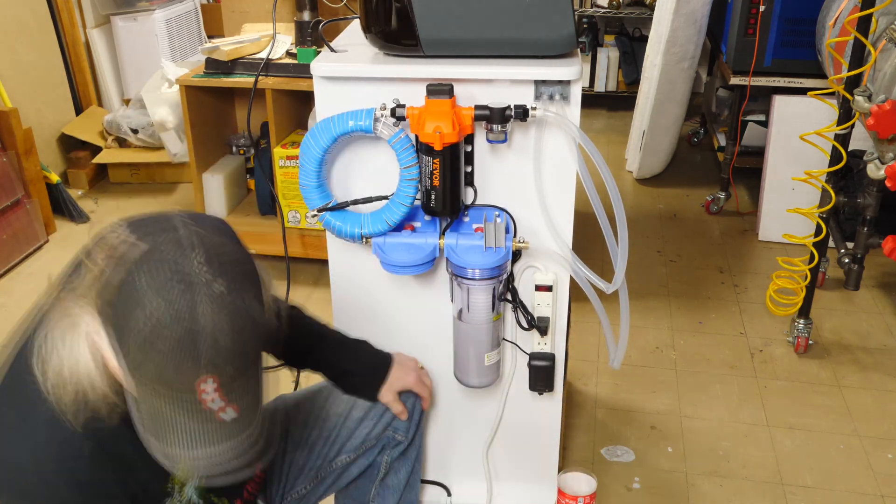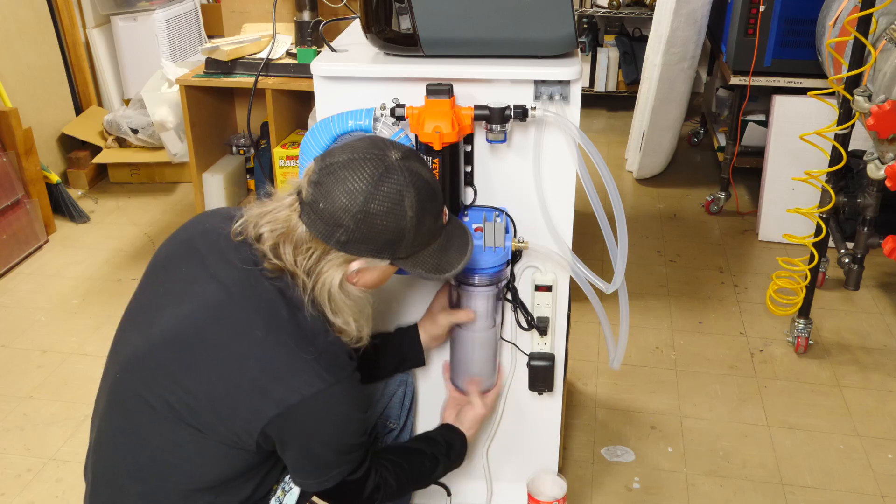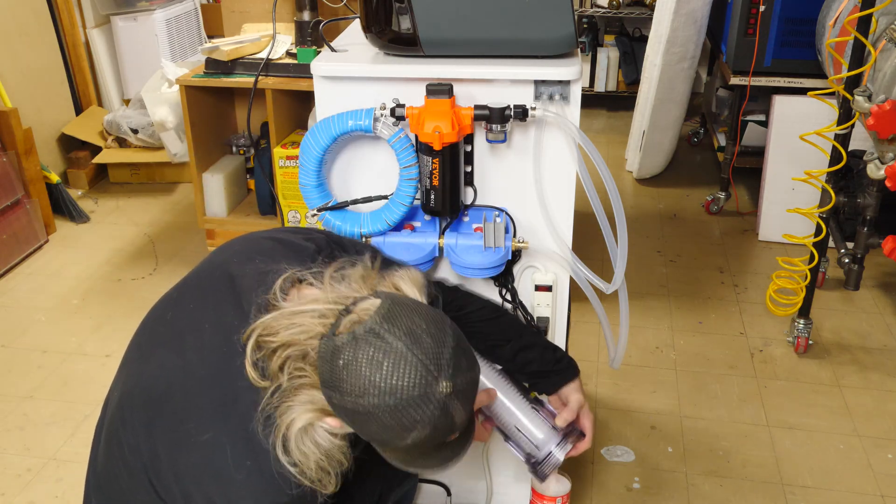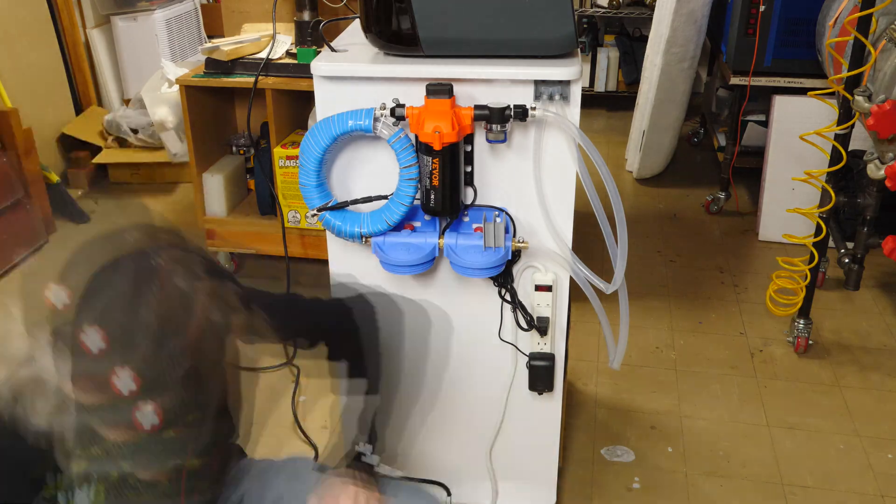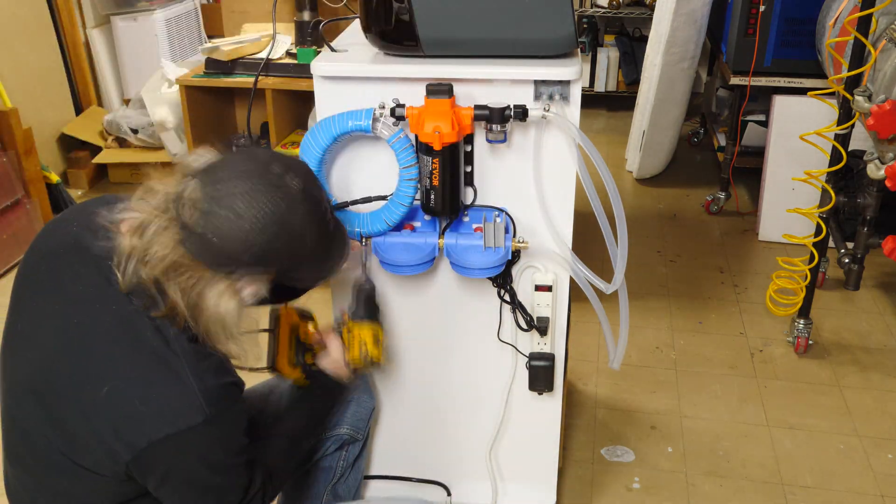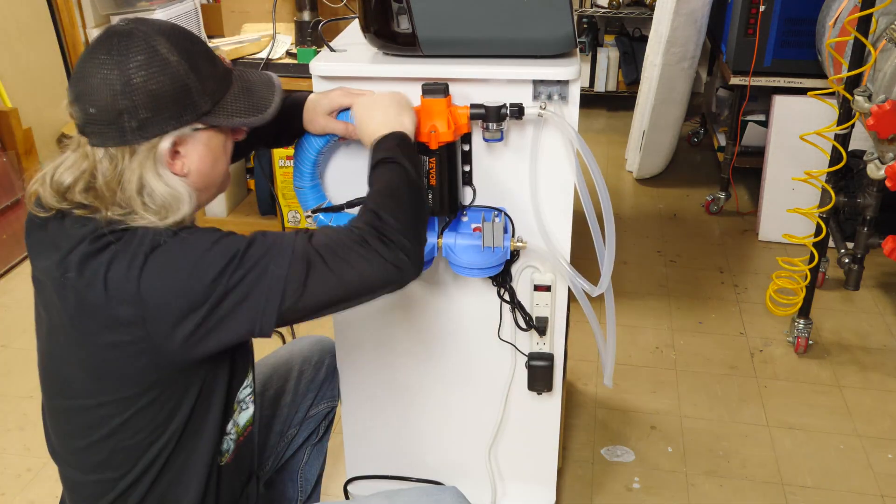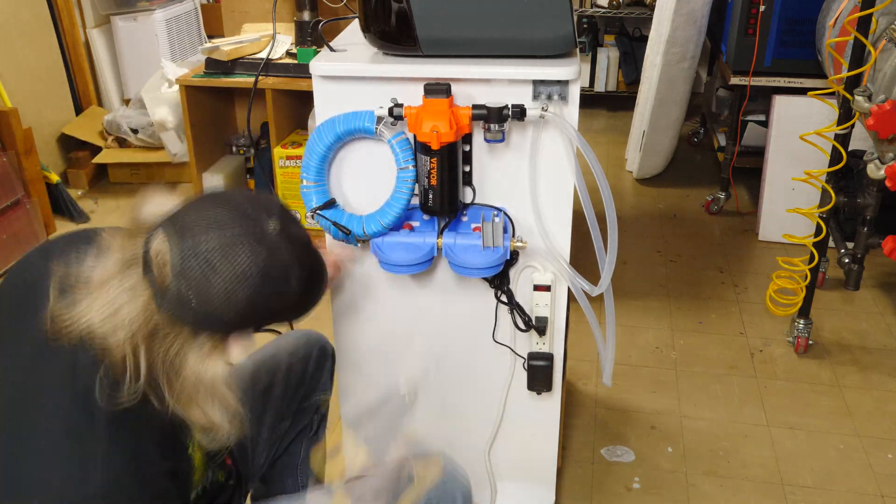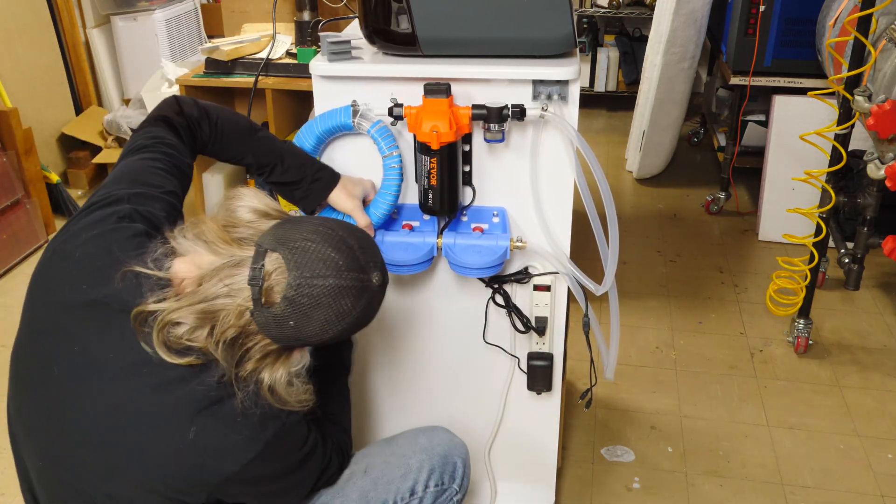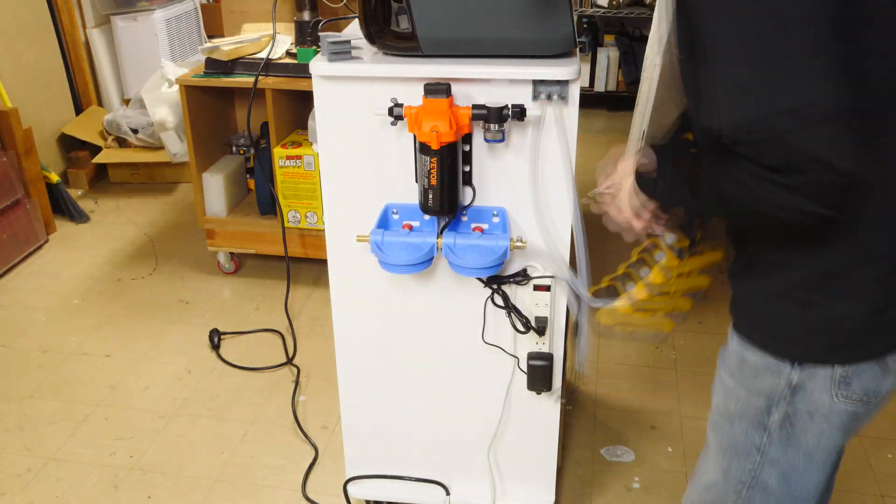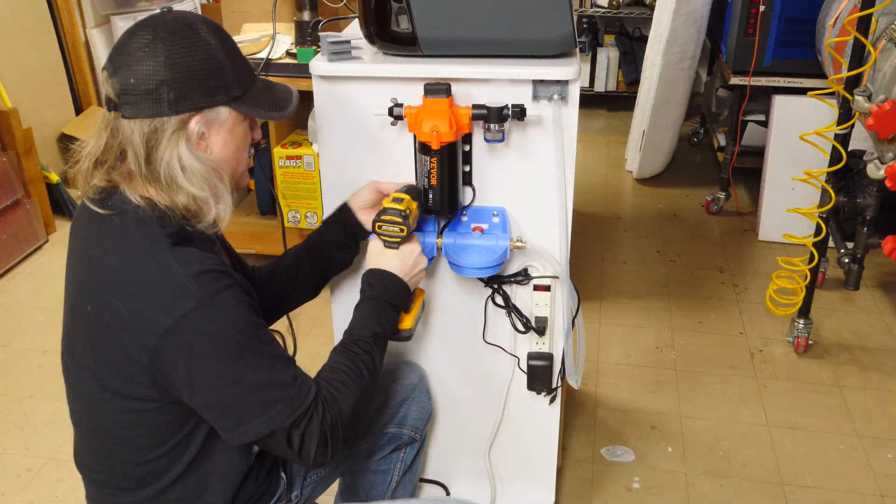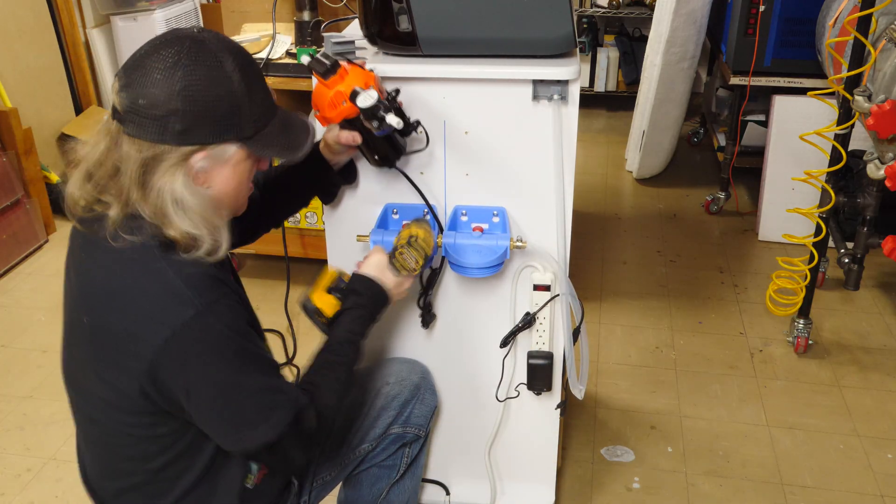Now I'm draining the IPA out of the filters. It would be really nice to have valves on the bottom of those, we'll add those later in the video. That'll make changing the filters much easier. For right now we'll just take everything apart and reassemble it in a different order to what I think will be a better setup.